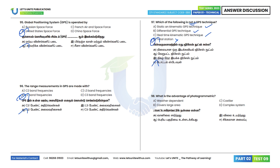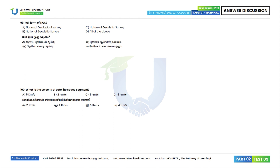Question 98: What is the advantage of photogrammetry? It covers a large area. Option B is the correct answer. Question 99: Full form of NGS is National Geodetic Survey. Option B. Question 100: What is the velocity of a satellite in the space segment? The velocity is approximately 4 km per second (accurate answer: 3.9 km per second). Option B.